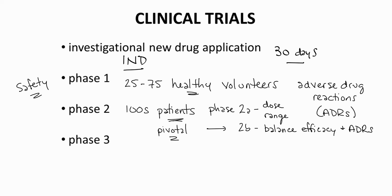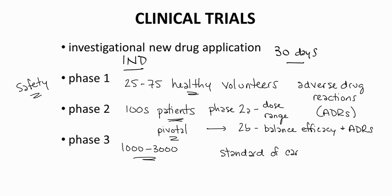Phase III trials enroll a large pool of patients, maybe 1,000 to 3,000. Again, these are patients, not healthy volunteers. Phase III trials are often called the standard of care. As with other phases, safety remains a concern.